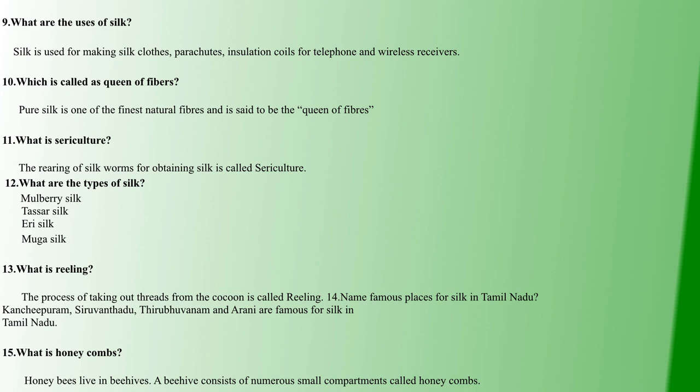Silk fabric was first developed in ancient China. Ninth question: what are the uses of silk? Silk is used for making silk clothes, for insulation coils, and for telephone and wireless receivers. Pure silk is called the queen of fibers because of how expensive it is.